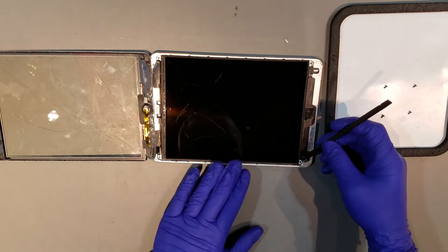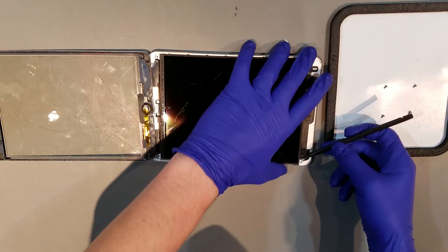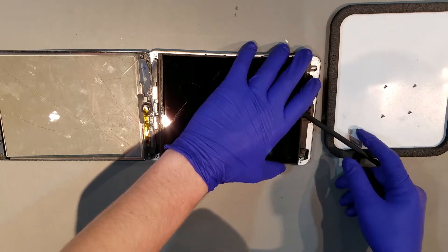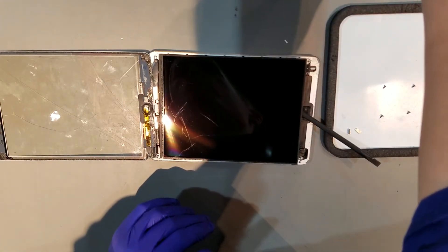Once the screws have been removed, you can begin to pry up the LCD. Though do keep in mind that the back of it is adhered on both sides, so you'll want to slide a thin tool underneath it to unadhere it from the back plate.